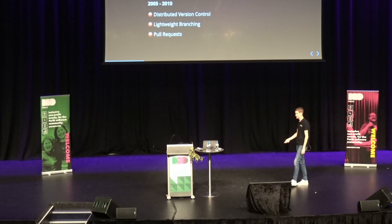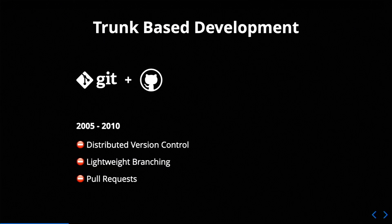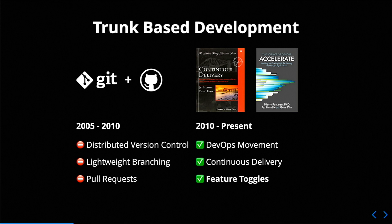People got fed up with this, and some developments started to come out. Around the end of 2010, a couple of books came out — the book by Dave Farley and Jez Humble on continuous delivery, really pushing the idea of high degrees of automation, avoiding manual testing, and trunk-based development. As well as Accelerate. These also coincide with the DevOps movement, and this is where our story of feature toggles starts.